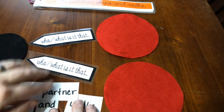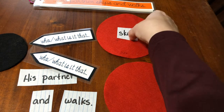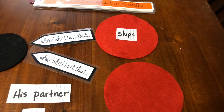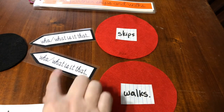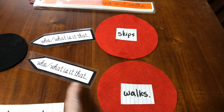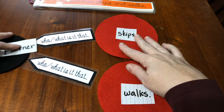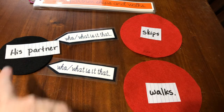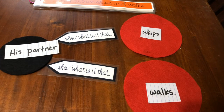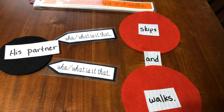His partner skips and walks. We know skips is a verb, so we're going to put it on the red circle. And we know walks is a verb, so we're going to put that on the red circle. Now let's ask: who is it that walks? His partner. Who is it that skips? His partner. And let's put 'and' in the middle here to show that his partner skips and walks.